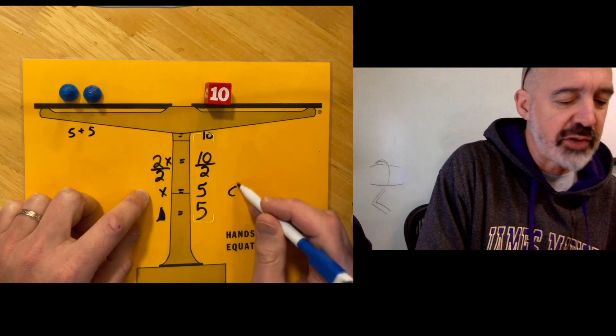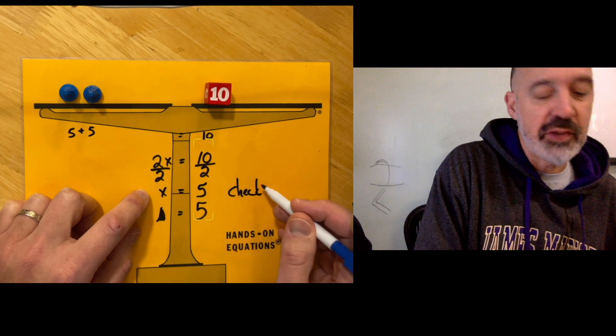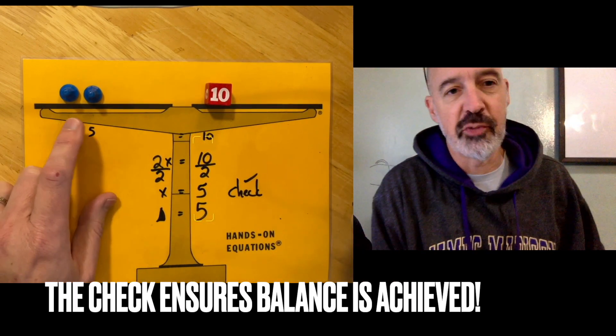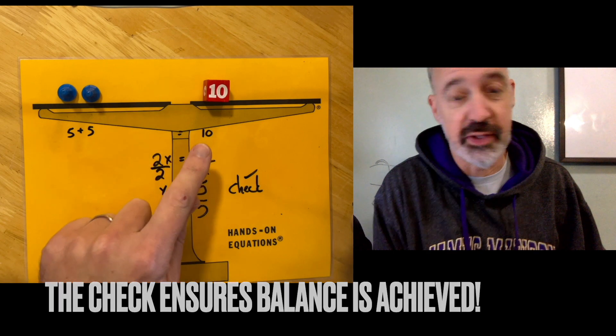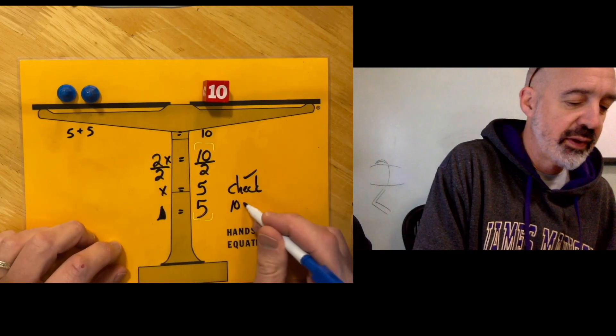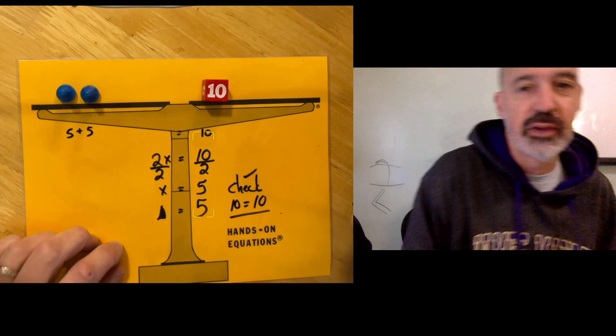And then in this program we do something called a check, which basically means that you just put your numbers back in place to check that it's in balance. So here 5 plus 5 does equal 10 because 10 equals 10.